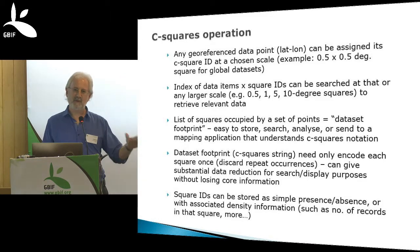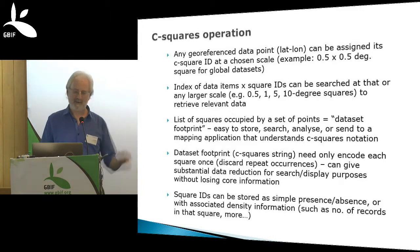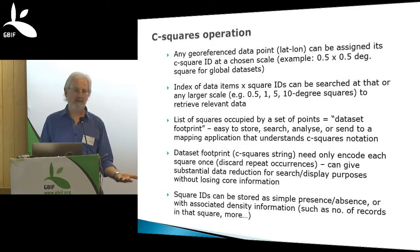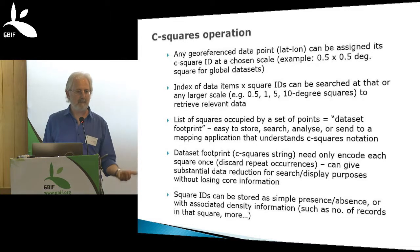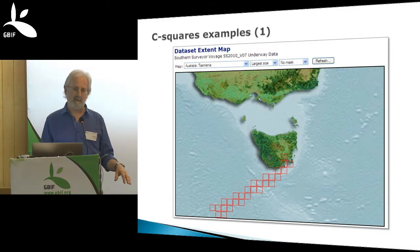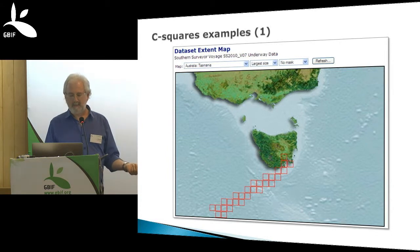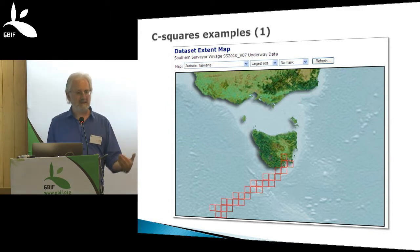I built systems at my own agency to store these C-squares strings for any dataset, and also built a mapping utility which you could send a string of squares across the web to my agency in Hobart, Tasmania, Australia, and in real-time you'd get back a map in your web browser. In addition to the square IDs, you might just want to store presence or absence, or you might want to store some numeric values — 10 records or 100 records in this square, or some probability. So they don't just have to be binary. This is the sort of system I was building in 2002 to track where a particular ship had been and where it had collected data.